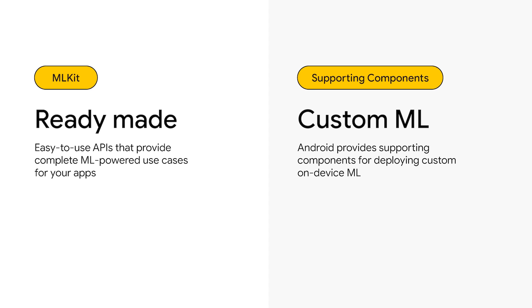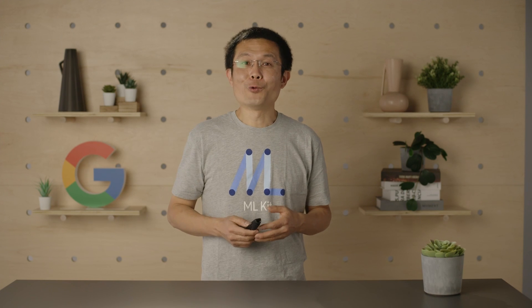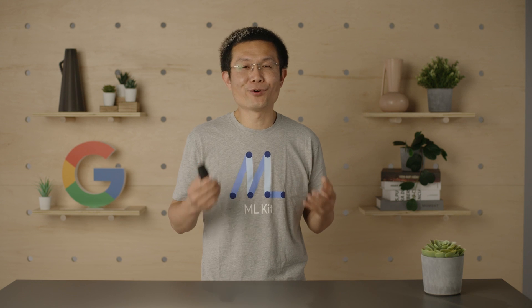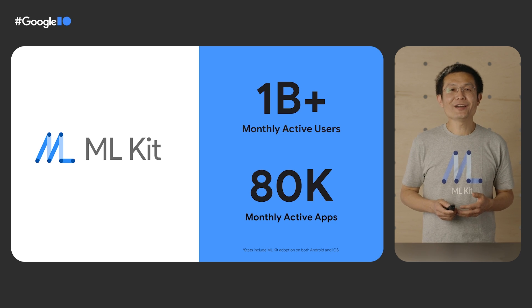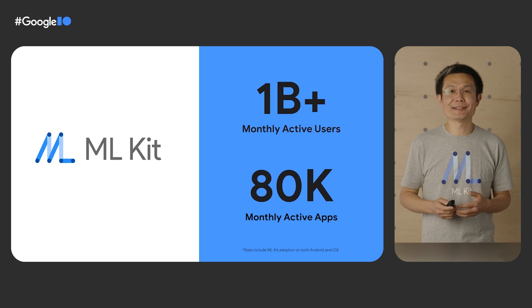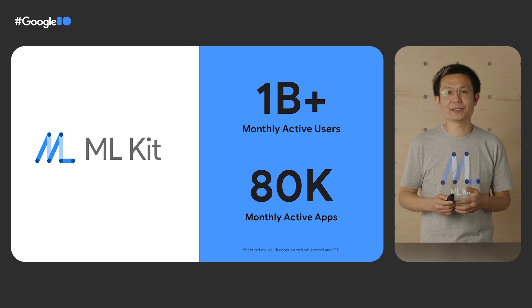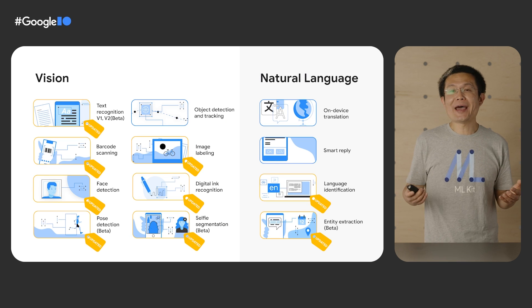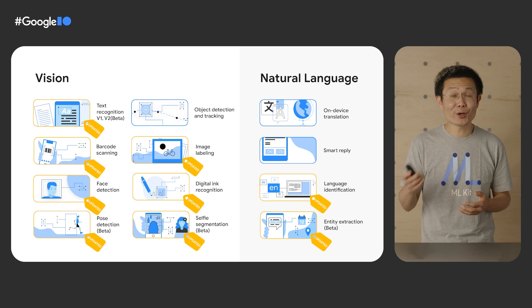Android provides a custom ML stack, which consists of a set of supporting components that make it easier to deploy custom ML. This year, we have exciting updates on both ML Kit and the supporting components provided by Android. Since launch in 2018, ML Kit has been growing rapidly. Combining Android and iOS, its usage has more than doubled since last year to over 1 billion monthly active users and 80,000 monthly active apps. Over the past year, we have been making major updates across our existing APIs, improving accuracy, latency, and SDK size.